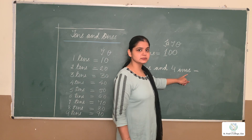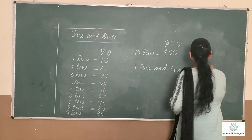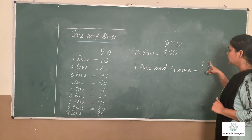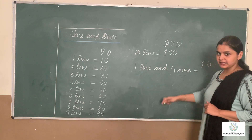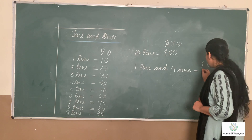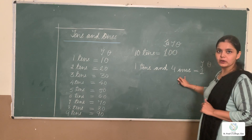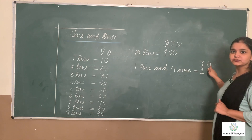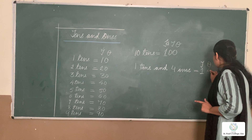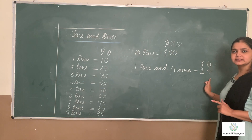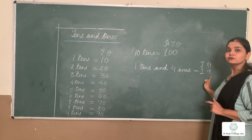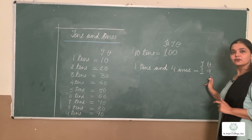4 ones means 4. So we can write T and O. 1 ten means we will write below T we will write 1, and we have 4 ones. O stands for ones — we have told you in place value. So we will write here 4. Now what is this number? 1 4 — that is 14.